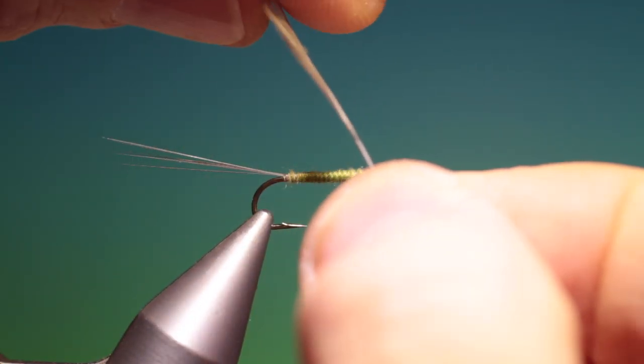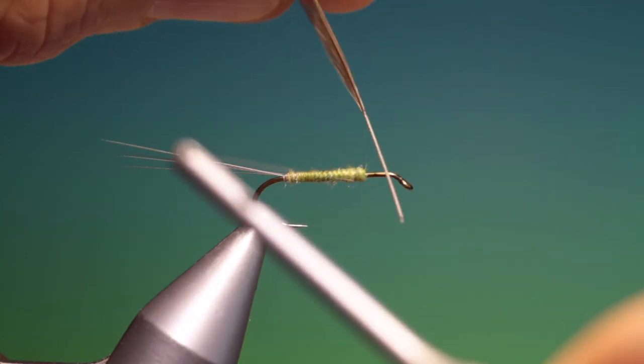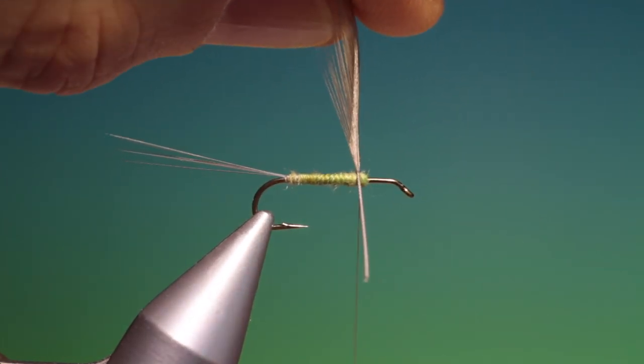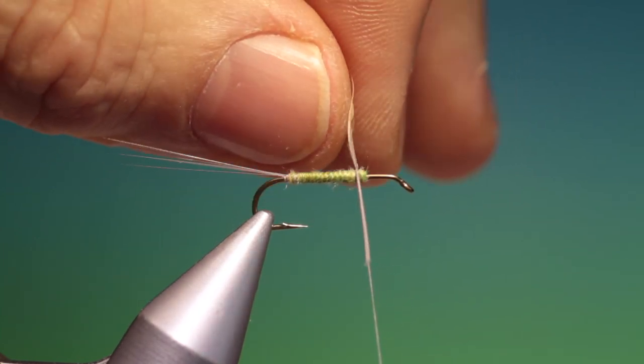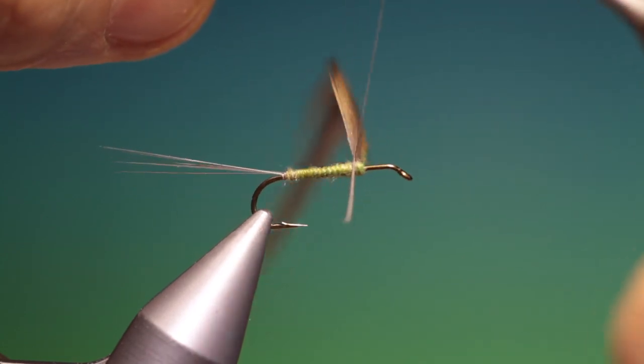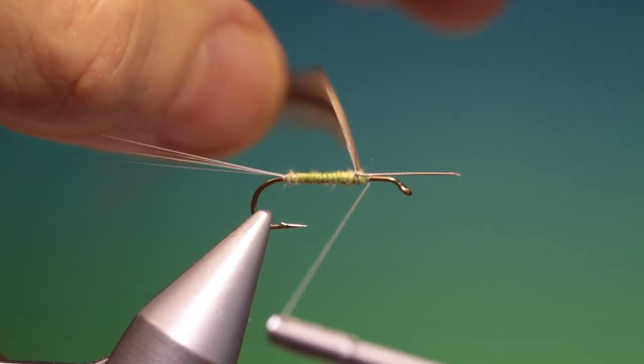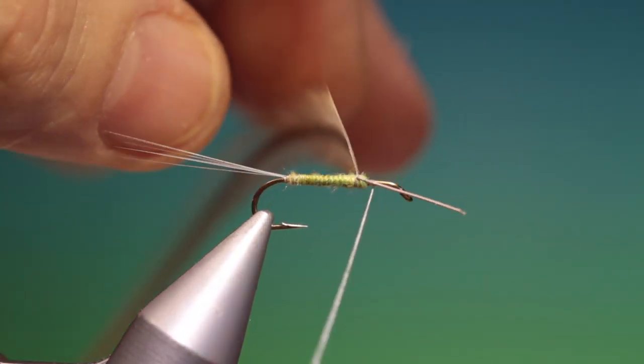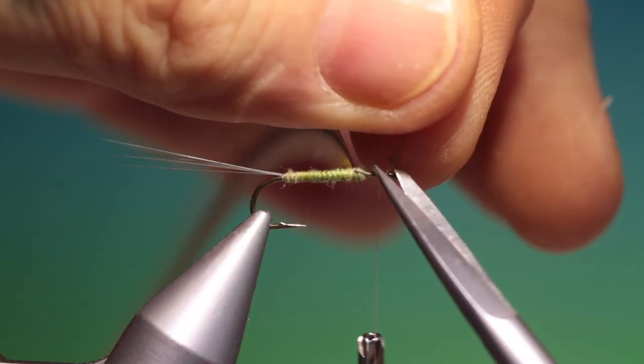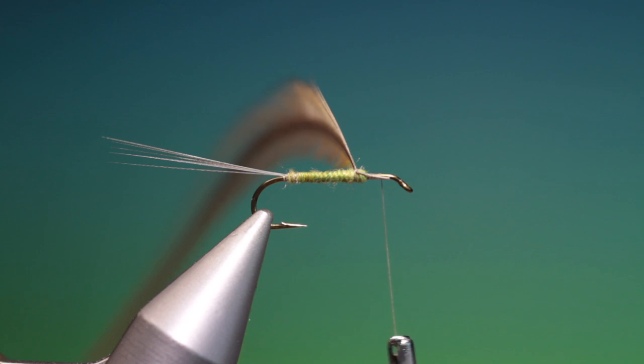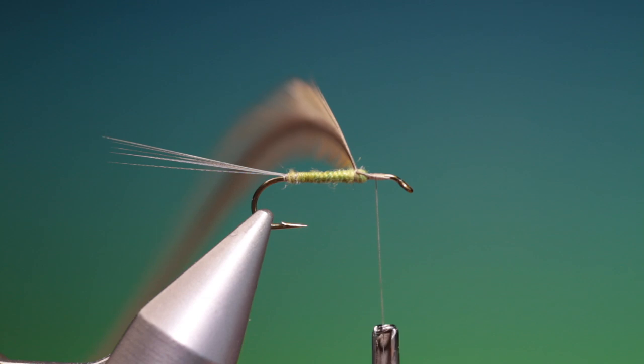Now what we want is a dun hackle and we want this to be a little larger than for the hook size, you'll see why later. And we'll just tie this in slightly out of the way because I want to keep room, make room for the wing. So we go forward with that and we can just trim this off, and then we'll go back to there.